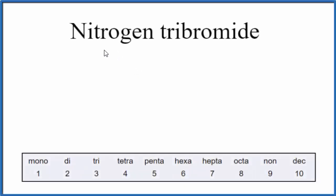To write the formula for nitrogen tribromide, we first need to figure out what type of compound we have.